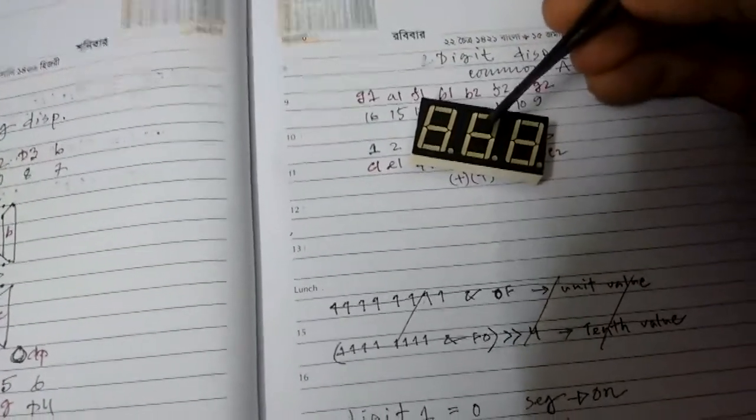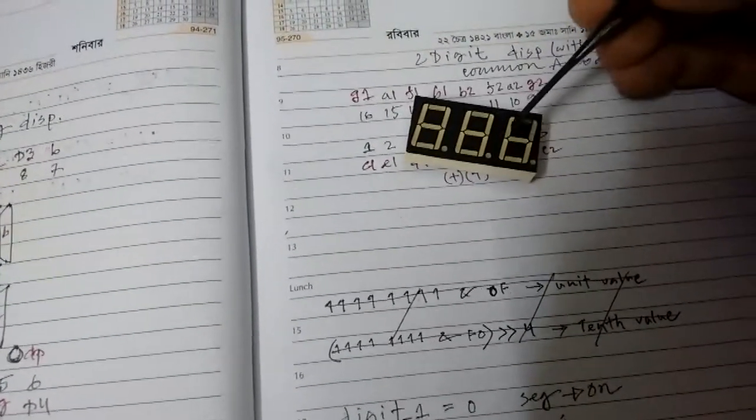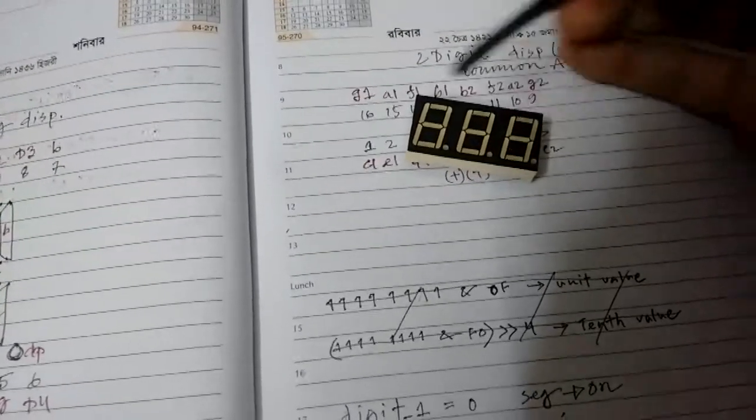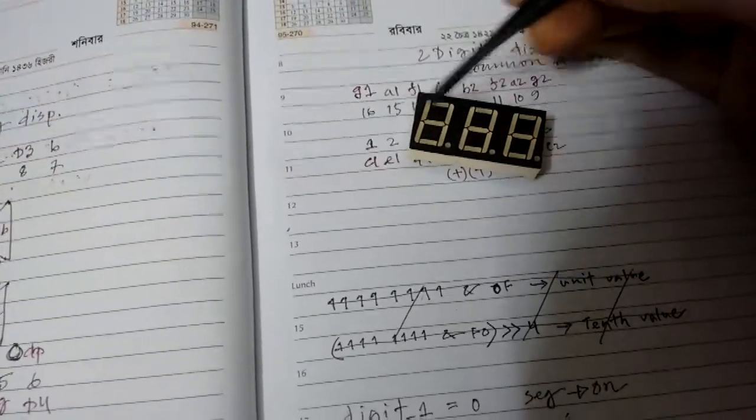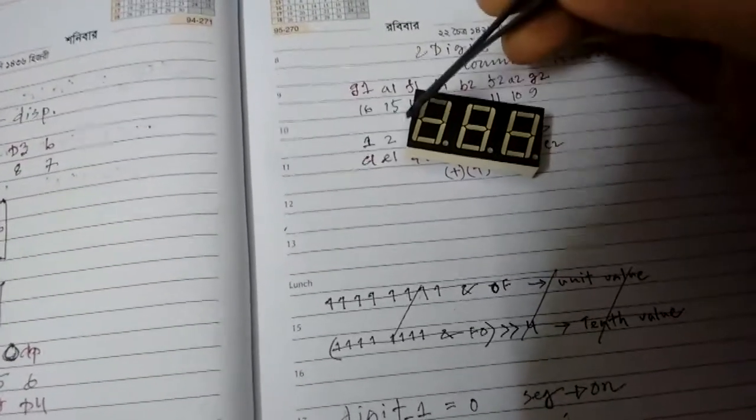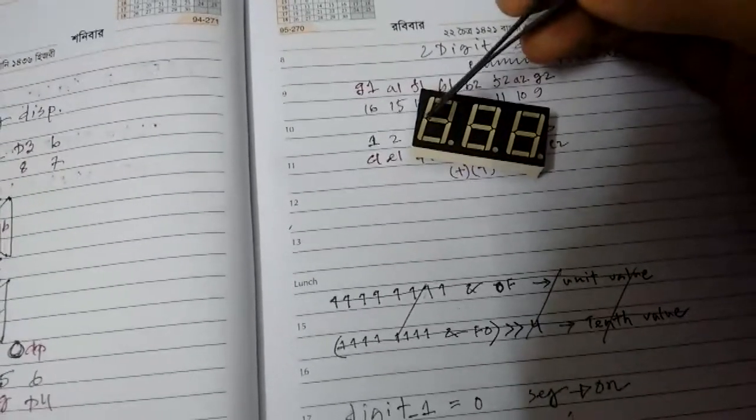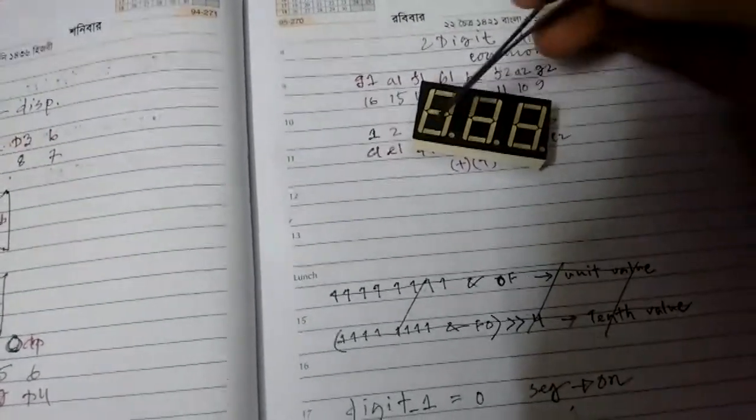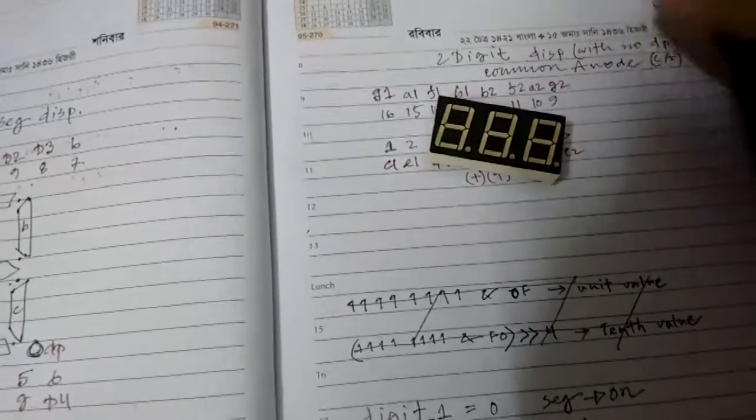So let's say if I want to show 1, 2, and 3, the microcontroller will put 1 here, then rapidly switch to this display and show 2, and then switch to this display and show 3, and go back to 1 again.